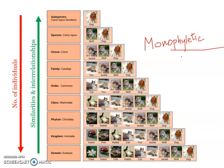The rank of a category is either its absolute position in the hierarchical classification or its position relative to other categories. With respect to species, the next higher category is the genus.